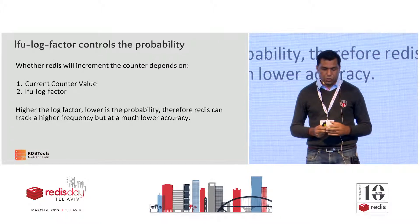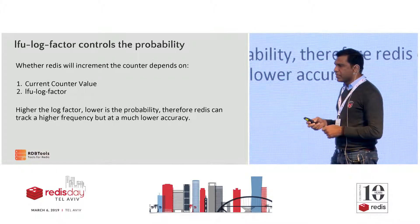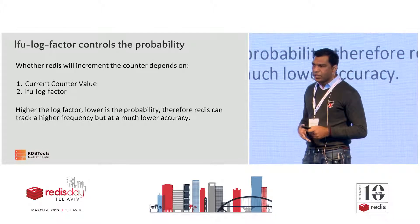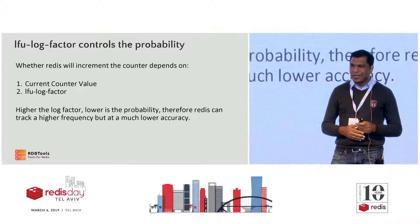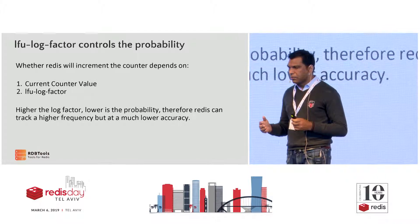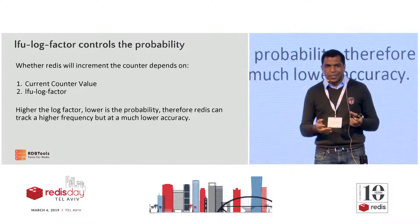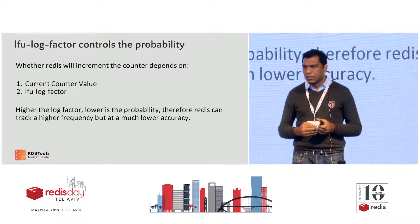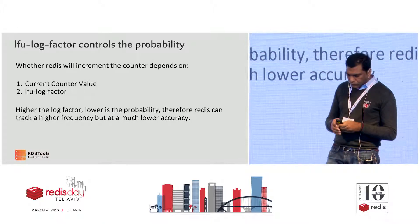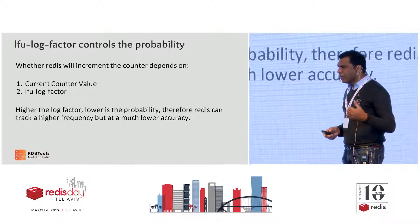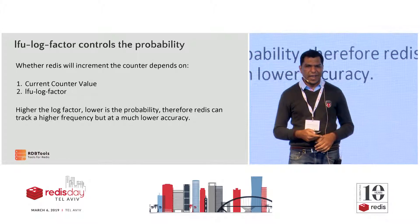The LFU log factor essentially controls when Redis will increment. The higher you set the value, the lower the probability that Redis will increment it, which means you have a much broader range of values that frequencies can store, but you're trading off accuracy. Simply put, the higher your log factor, the higher the range of values you can store, but the accuracy is much lower. We'll look at what that means practically in a moment for tuning your cache.